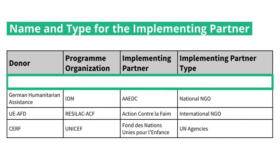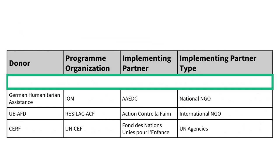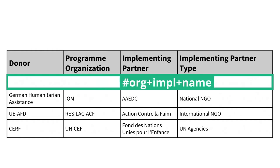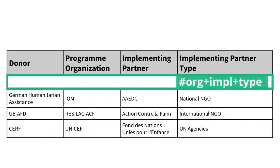Finally, we have two columns with different information about the implementing partner. Here, you would use the HXL tag hashtag org plus impl plus name for the column with the name of the implementing partner, and hashtag org plus impl plus type for the type of organization.